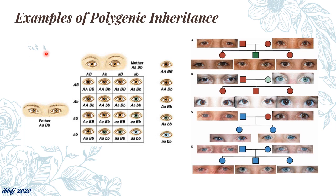Another example is eye color. As you can see here, eye color is represented to the left side with a di-hybrid cross having genes A and B, producing different types of physical traits in the eyes. We can also have this represented by making a pedigree chart such as this one.